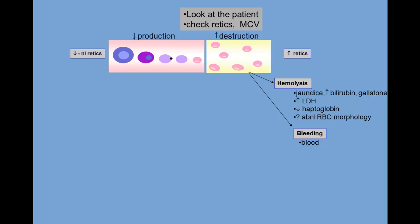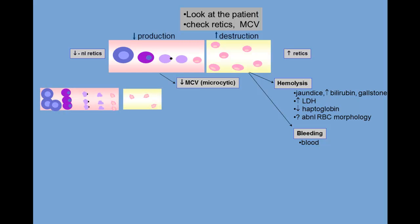If the reticulocyte count is low or normal, there is a production problem. The next step is to look at the MCV. The low MCV — microcytic anemias — all have a problem with hemoglobin production, either because of an iron problem or a globin problem. On the iron front, this is usually iron deficiency, either from poor dietary iron intake or depletion of iron stores by chronic bleeding. Less commonly, the problem is poor iron utilization, associated with chronic inflammation or a rare group of disorders called sideroblastic anemia.